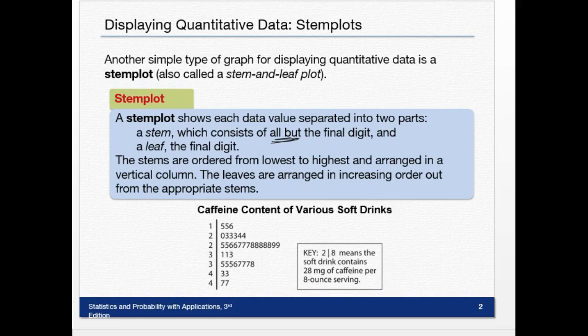The stems are ordered from lowest to highest and arranged in a vertical column. The leaves are arranged in increasing order out from the appropriate stems. So this is what one looks like—these are the stems right here, and these are the leaves. Each of these represents all but the final digit, and the leaf is the final digit.